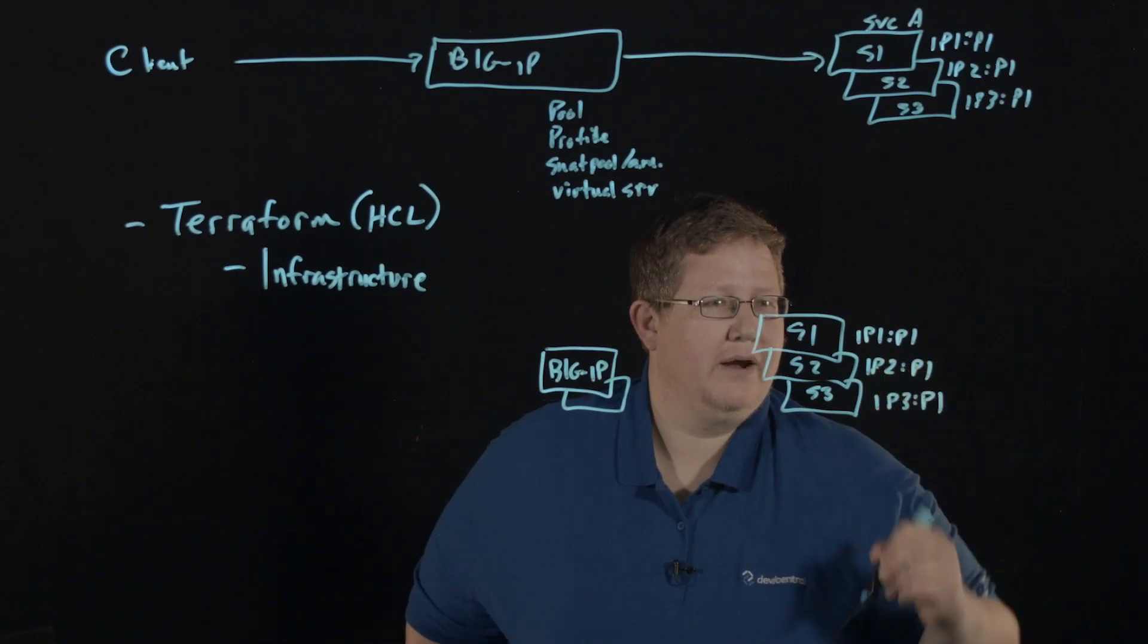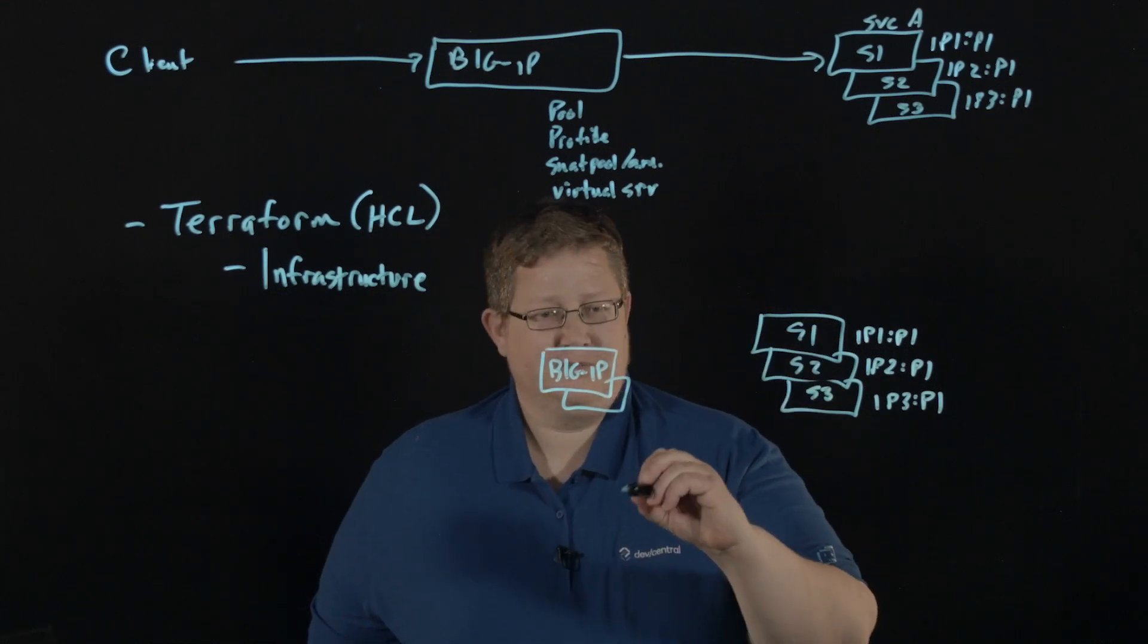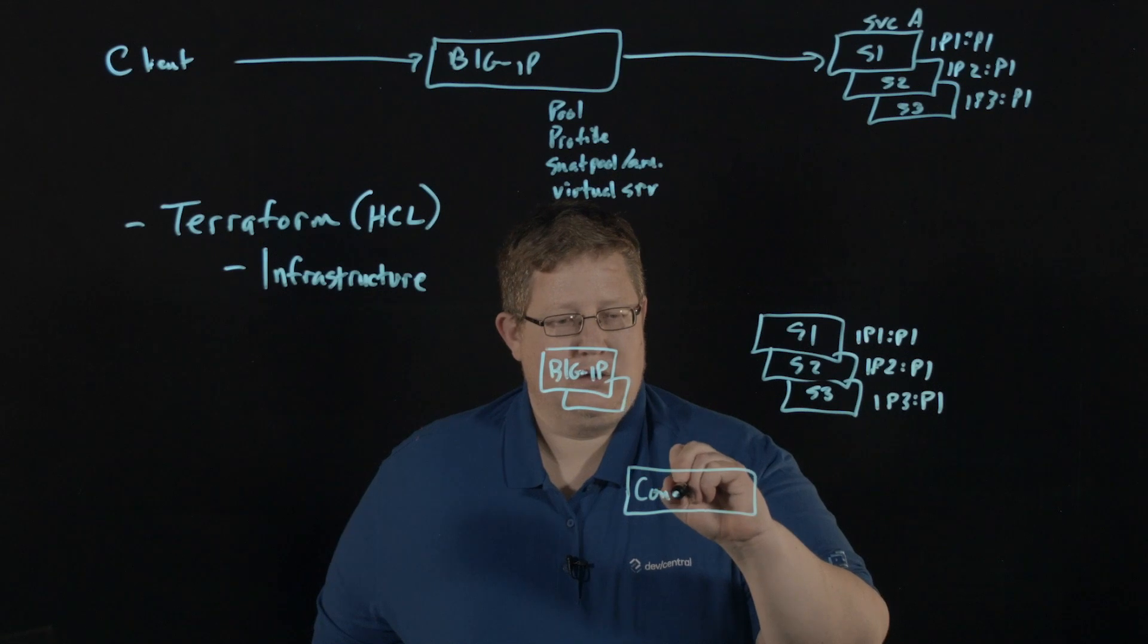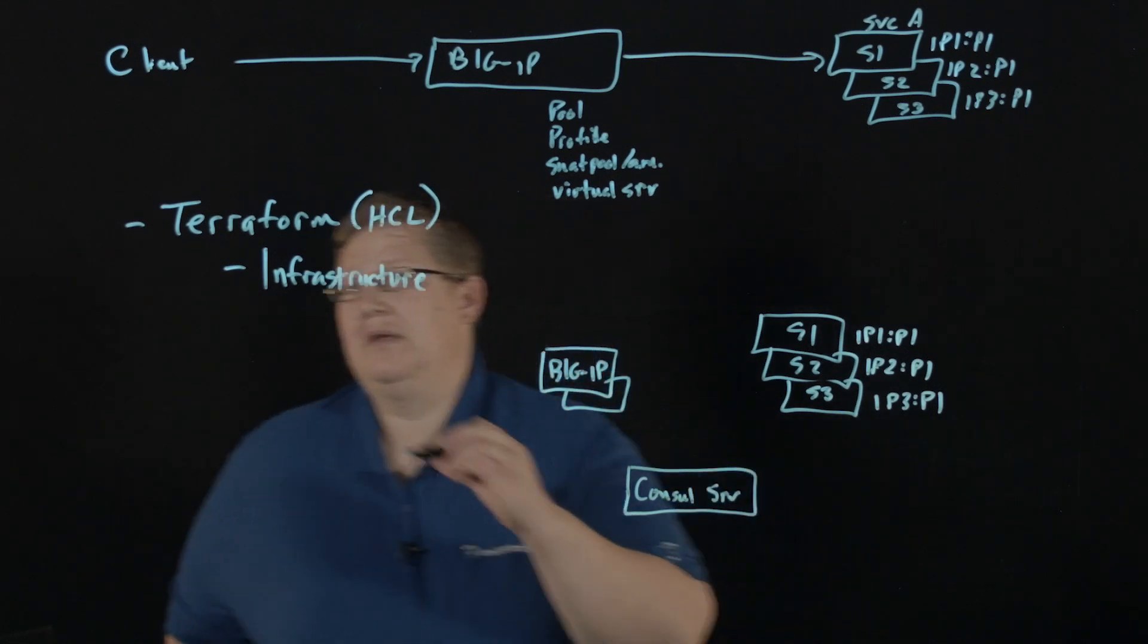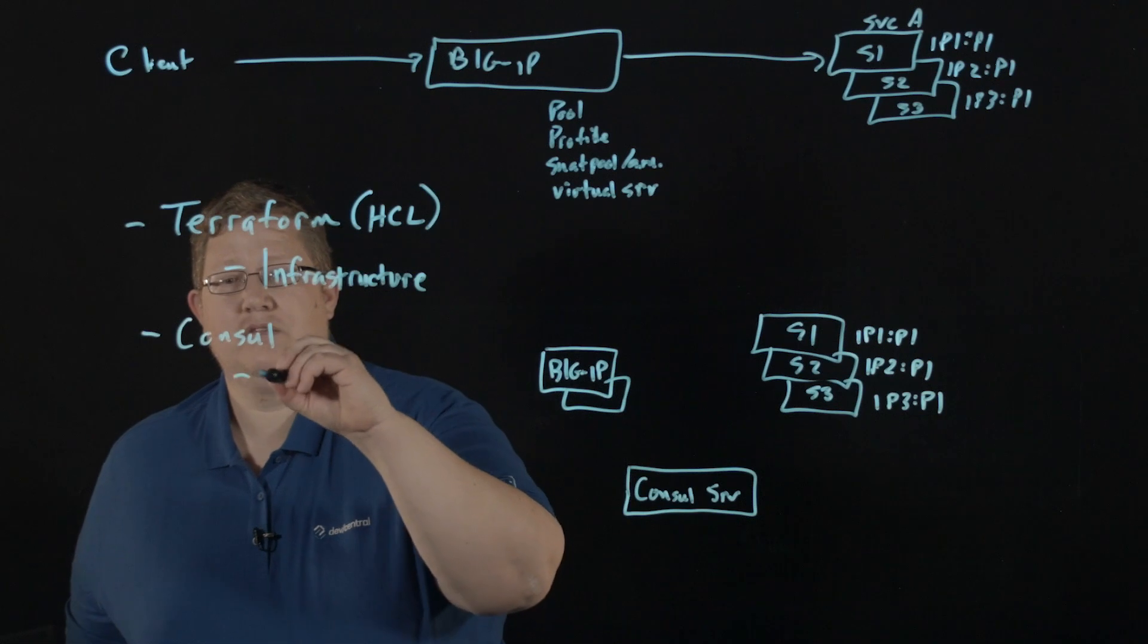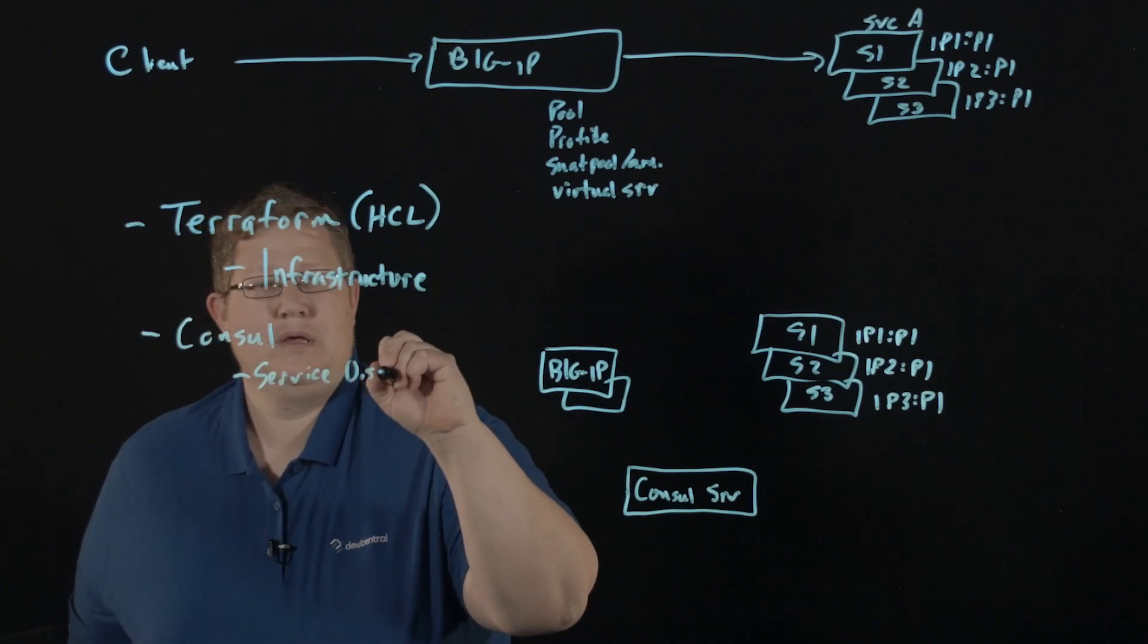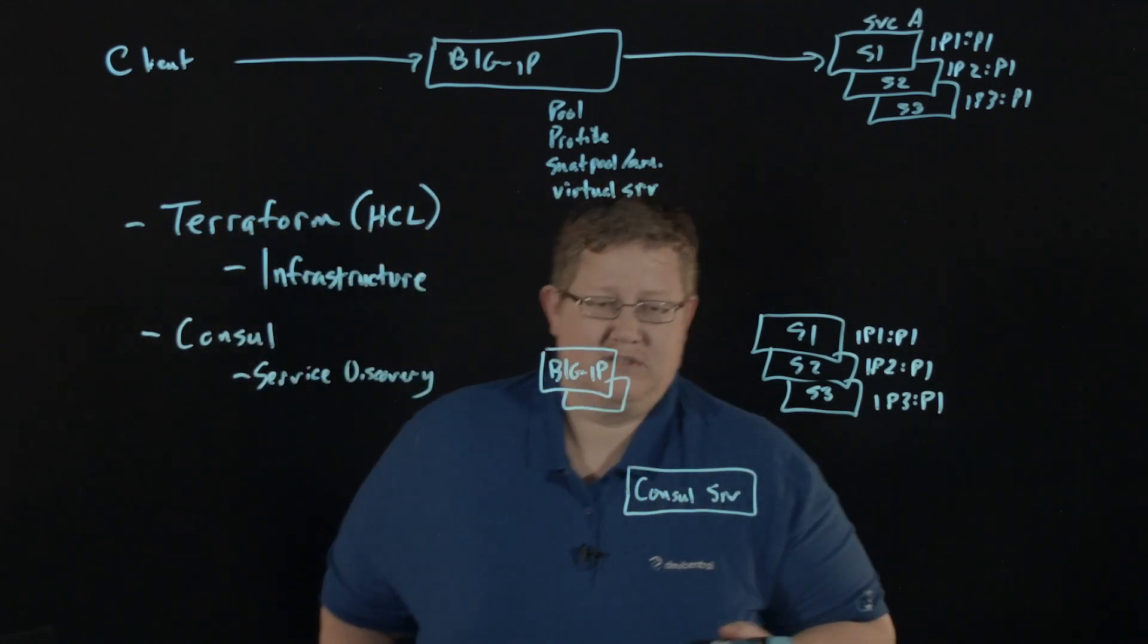The reason we don't care is because in addition to this infrastructure, we're going to deploy something called Consul. We've got a Consul server here, and this is another HashiCorp tool. And specific to this demo, we're really concerned about service discovery. Consul does more than that. You can read about it, but we're going to look at service discovery.